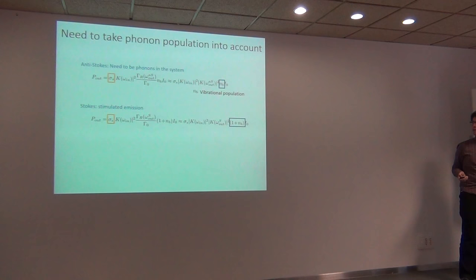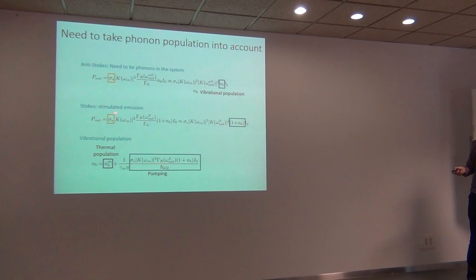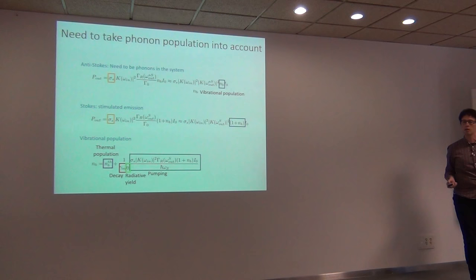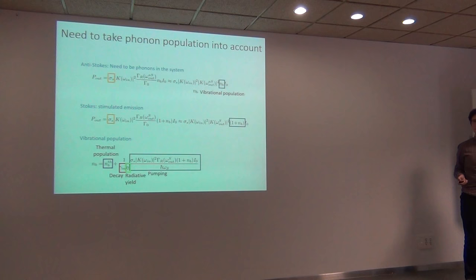We have an extra term in our equations, so we need an extra equation for the vibrational population. First there is the thermal population: a harmonic oscillator at a given temperature will have a population. Then we have to consider the pumping — every time a Stokes process occurs, the vibrations are populated. Dividing by the decay rate gives the steady state. There is also a term, which I won't discuss in detail, that says you must account for all photons in your system, not just those reaching the detector.